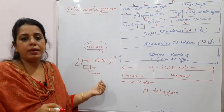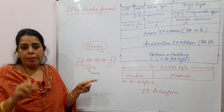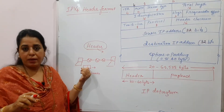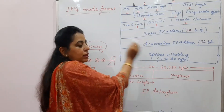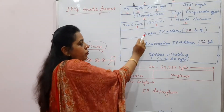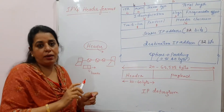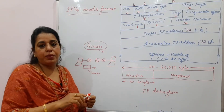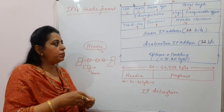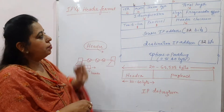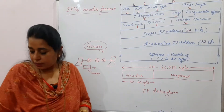Similar is the case here. Whenever a sender is sending a packet, that packet has a header part. The header will definitely include the source address and the destination address. Apart from these, there are other various things that have to be taken care of in the network. That particular information I will be explaining in today's session.